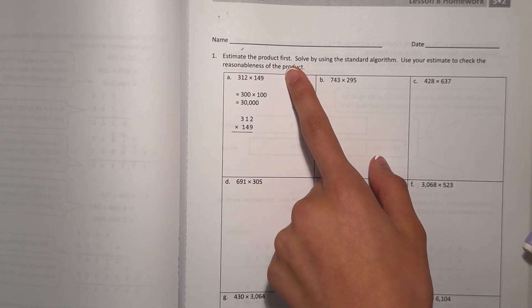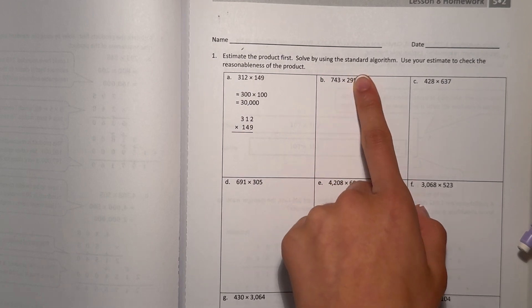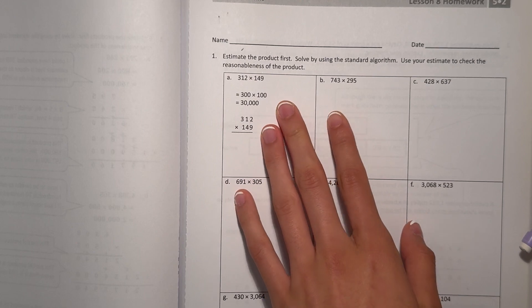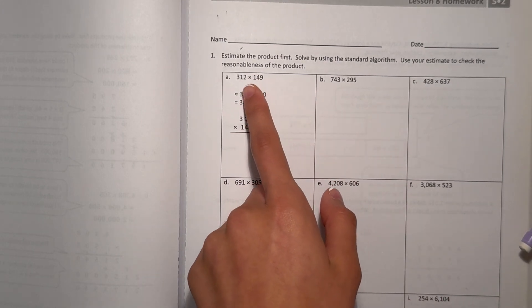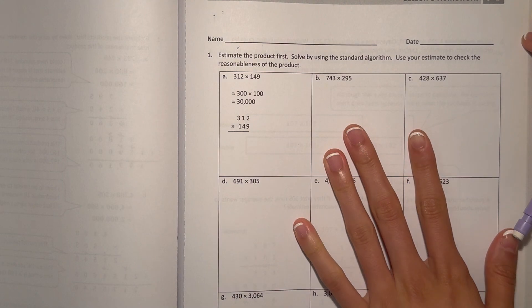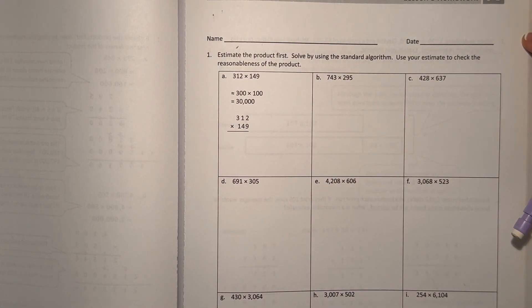Number one, estimate the product first. Solve by using the standard algorithm. Use your estimate to check the reasonableness of the product. So what it's asking you for here is for us to first make a reasonable estimate of what our product would be. And then after we actually do the real math, we can compare our estimate to the product to see how reasonable it is and tell if our product is reasonable or not.